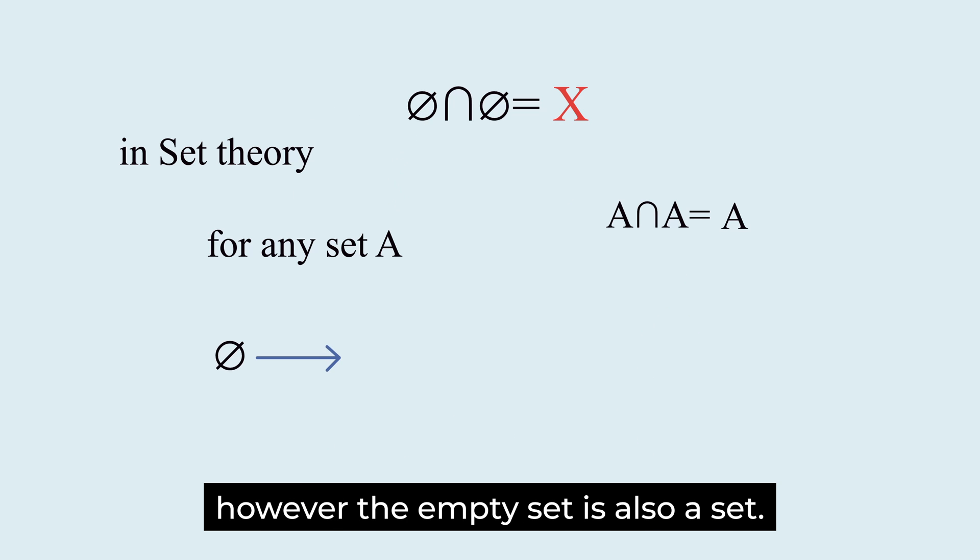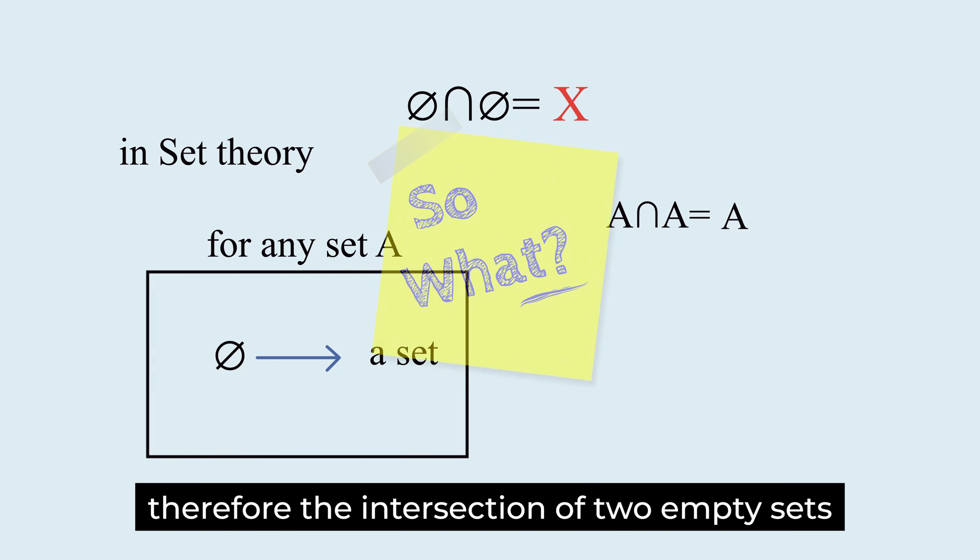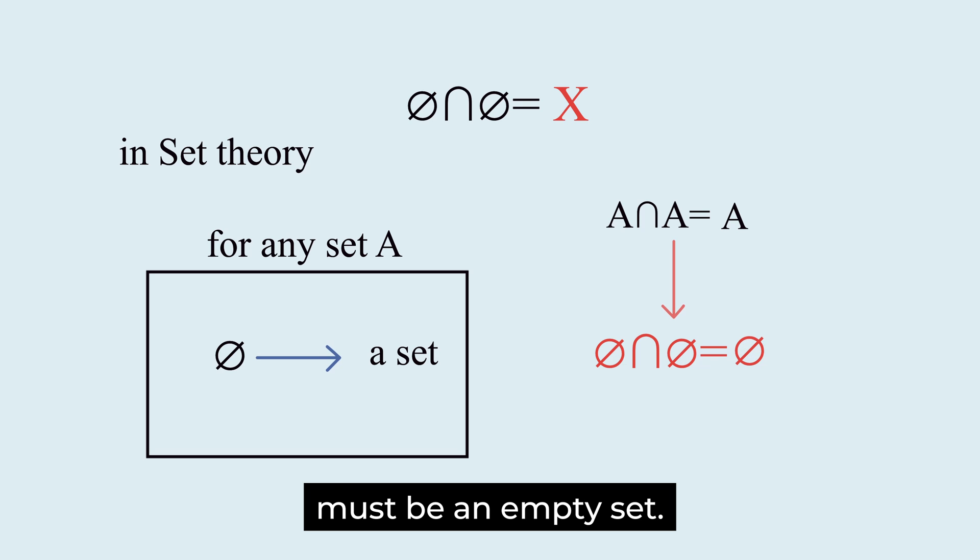However, the empty set is also a set. It is one of A, which is an arbitrary set. Therefore, the intersection of two empty sets must be an empty set. X is the empty set.